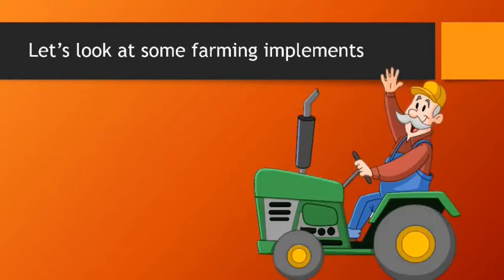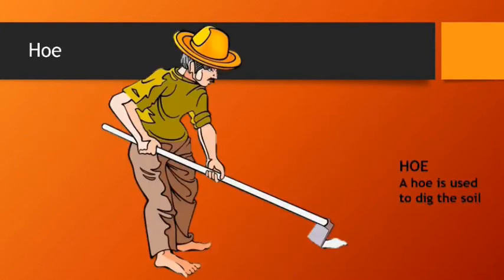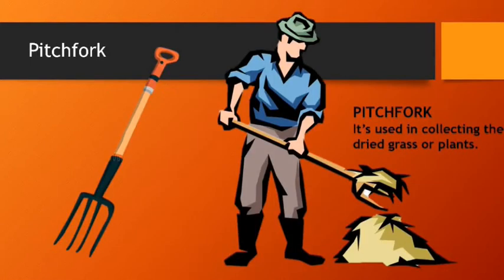Now let's look at some farming implements or tools. The first one is a sickle — it is used to cut the crop. The second one is a hoe — it is used to dig the soil. A pitchfork is used in collecting dry grass or plants.